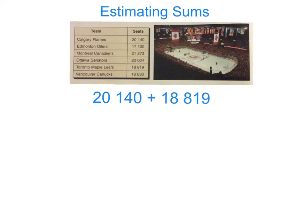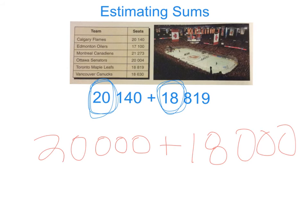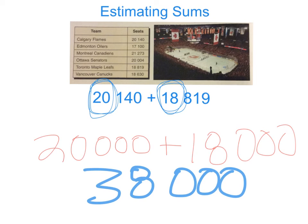Next, we can adjust these numbers so that we can get a more accurate answer when we estimate our sums. Let's look at the first two digits of each number. The first number is 20,140 — the first two digits are 2-0, so we can round that number to 20,000 quite accurately. The second number is 18,819 — the first two digits are 1-8, so we can round that number to 18,000 quite accurately. This leaves us with a total of 38,000 fans for those two games.